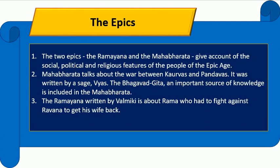The two epics — the Ramayana and the Mahabharata — give an account of the social, political, and religious features of people of the epic age. The Mahabharata talks about the war between the Kauravas and Pandavas. It was written by the sage Vyas. The Bhagavad Gita, an important source of knowledge, is included in the Mahabharata.